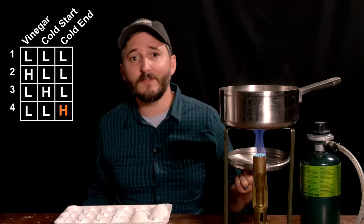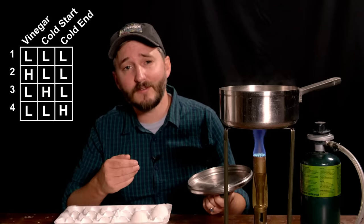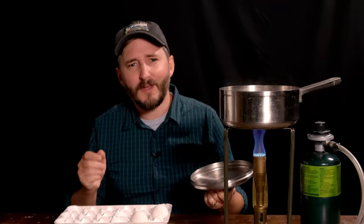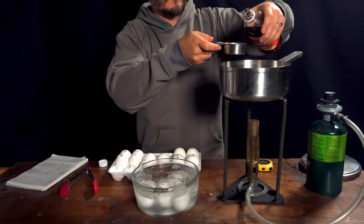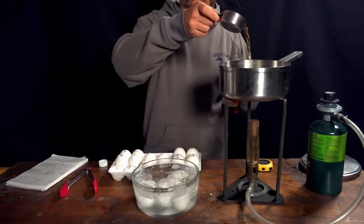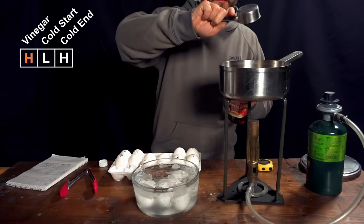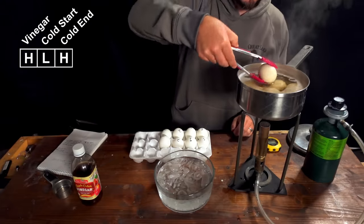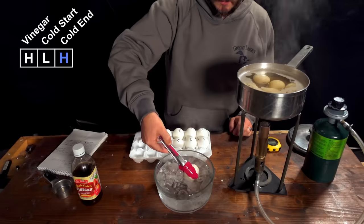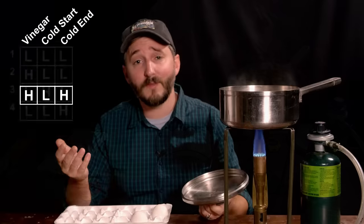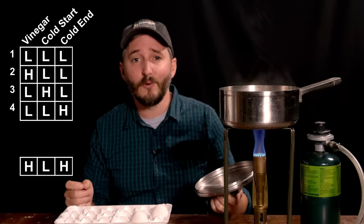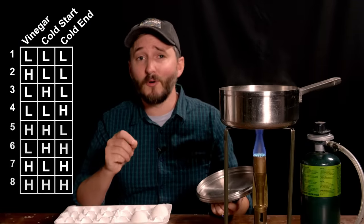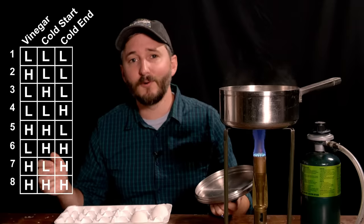If any of these makes the eggs easier to peel than the control test then we know what does and does not work. But here's where it gets complicated. What if adding vinegar to the boiling water does not make the eggs easier to peel by itself? But perhaps if the egg is first treated with vinegar and then also dropped into cold water the combination of these two variables has an effect where individually they fail. We would not discover that with our series of four tests so we need to add four more to account for all possible combinations.